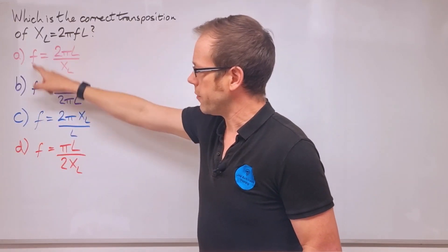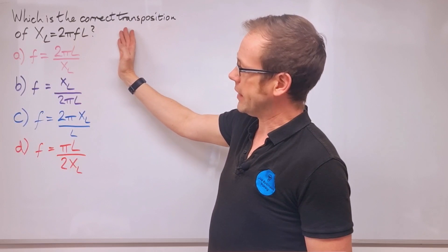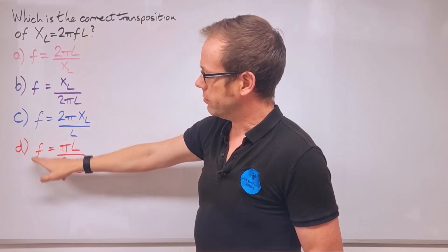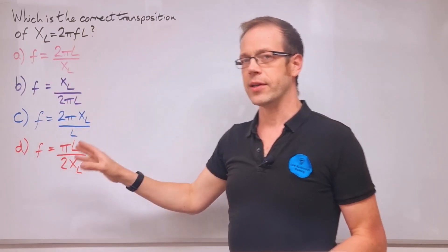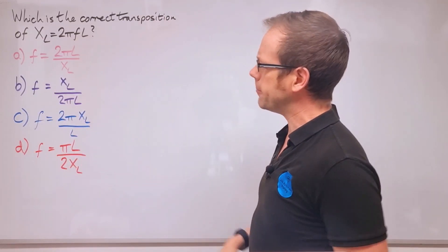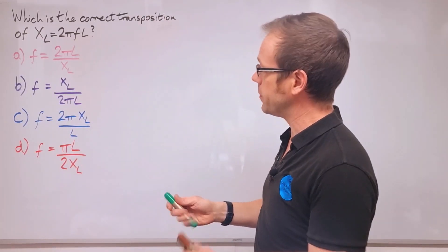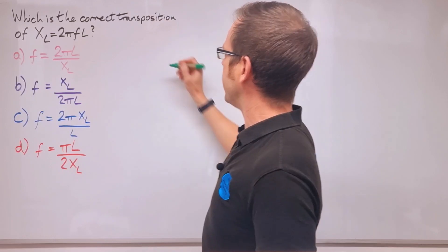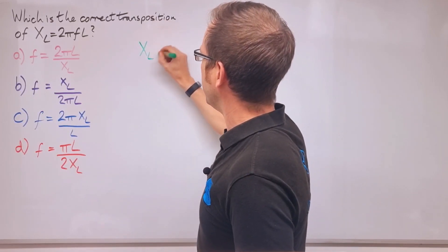The answers all show f equals something, so clearly we're trying to find out what f is going to be. We start off from the position where we've got XL equals 2πfl.